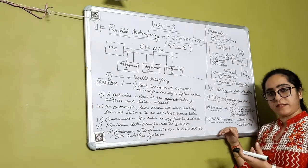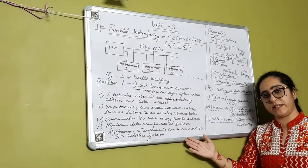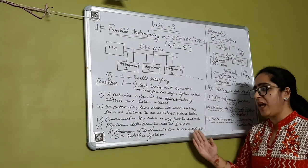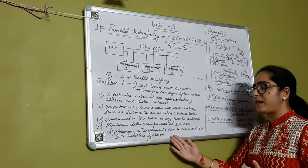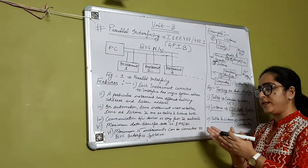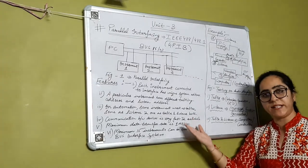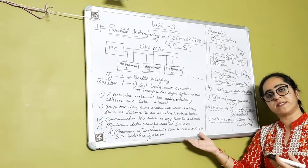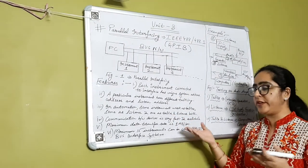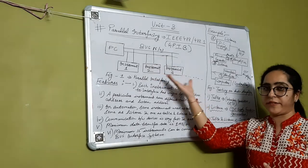In this way, the IEEE 488 bus system works. The advantages of this network: it is very easy to set up and reconfigure, the data transfer rate is 1 megabyte per second, a maximum of 15 instruments can be connected on the bus interface system, and it can work in automation where some instruments work as talker, some as listener, and some as both. They have different talking and listening addresses, and the hardware interface reduces hardware as all devices can be connected on a single interface system.